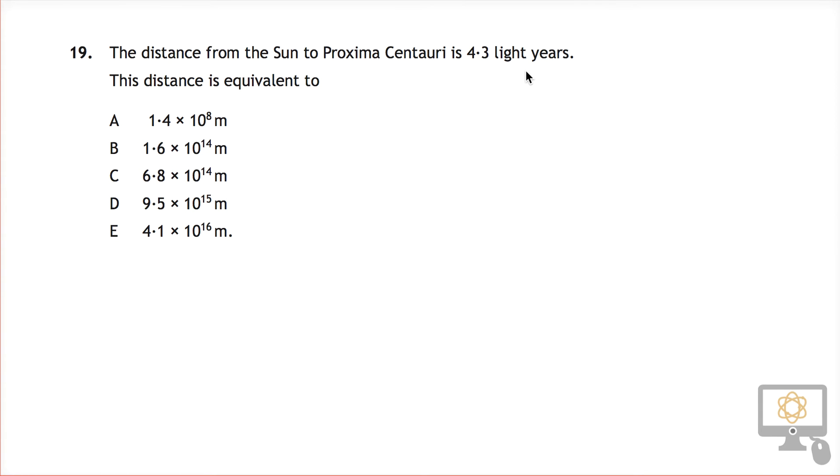So we need to convert this distance in light years to meters. The key thing to say is that light year is a distance. It sounds like a time because it's got the year tag on it, but it's a distance. One light year is the distance that light can travel in one year.